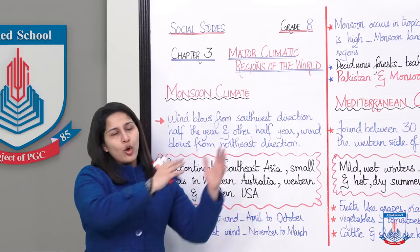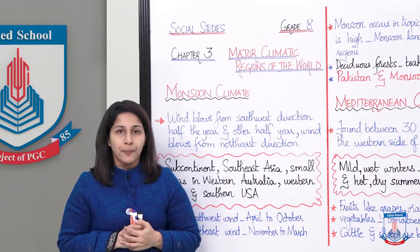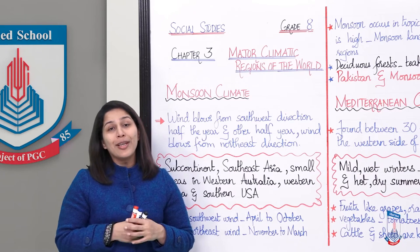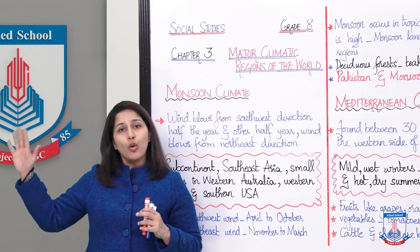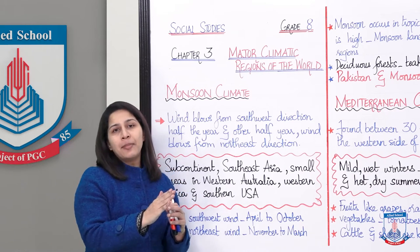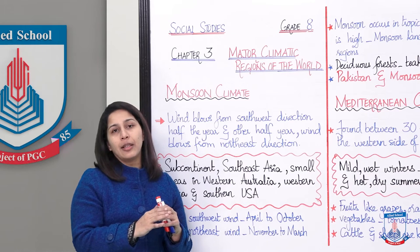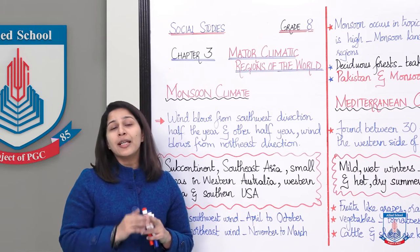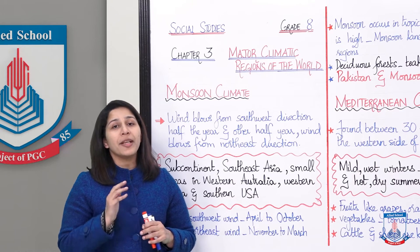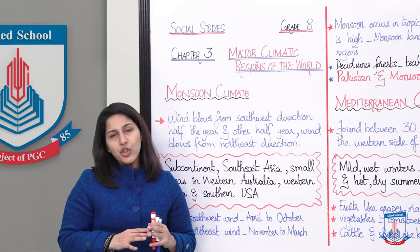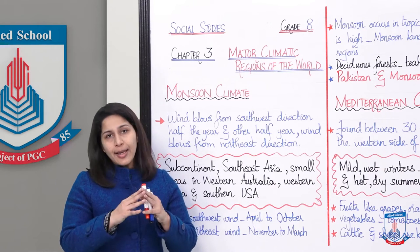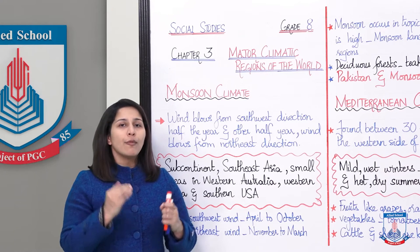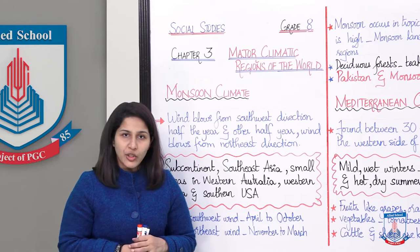Adha saal southwest direction se wind blow kerti hai aur aadha saal northeast direction se. Yeh winds isliye characterized hain kyunki jab yeh ocean se zameen ki taraf aati hain, toh yeh apne saath bahut saara moisture leke aati hain. And that moisture eventually falls as rainfall because of the high temperature — jab temperature high ho toh water vapor air mein condense kerke rainfall ke form mein fall kar jaata hai.